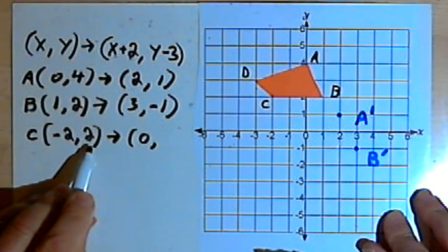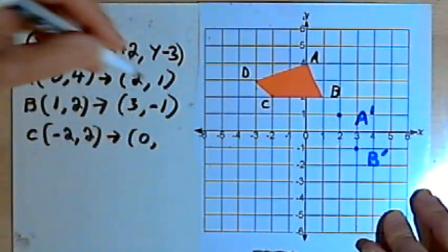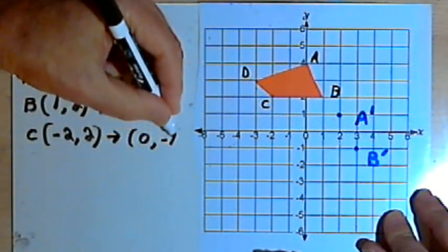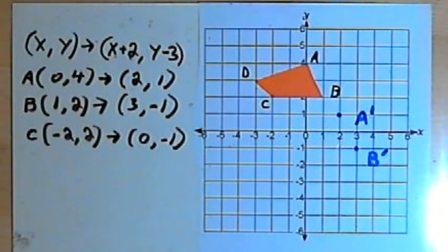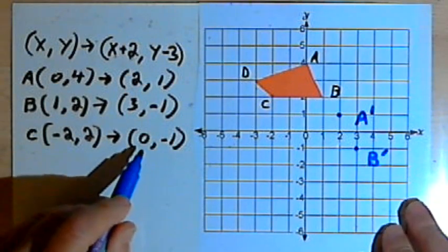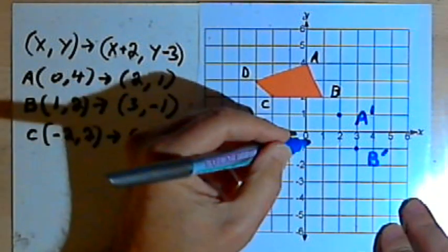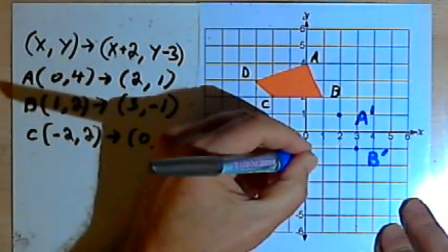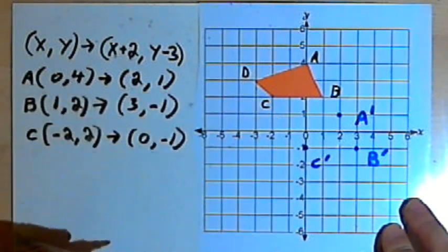I'll take the y-coordinate, 2, and subtract 3 from it. That will get me negative 1. So C prime is going to be at (0, -1). Here's 0 and negative 1. So C prime is right there.